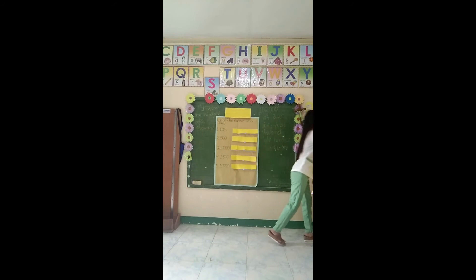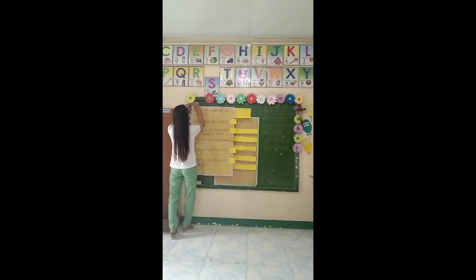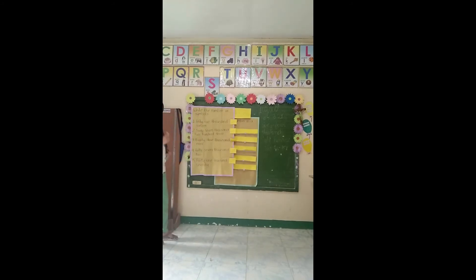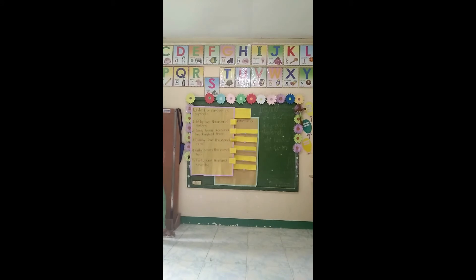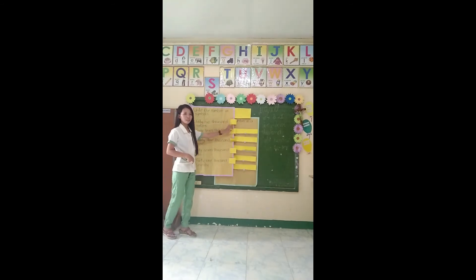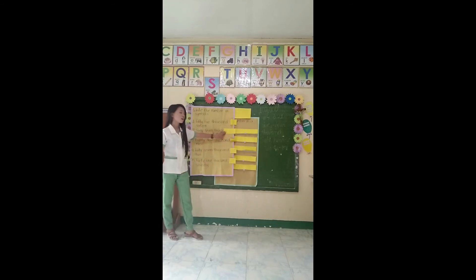I'll give you another example. Write the number in a symbol. So this is the word form, and the answer is in symbols. Number 1: 55,016. Answer: 55,016. Number 2: 67,203. Answer: 67,203.